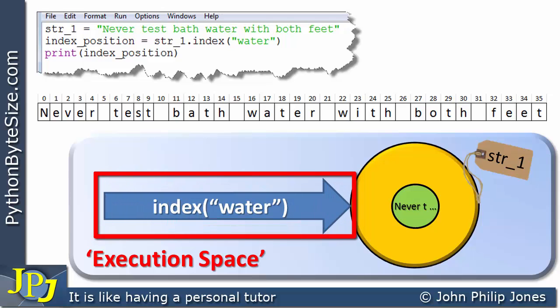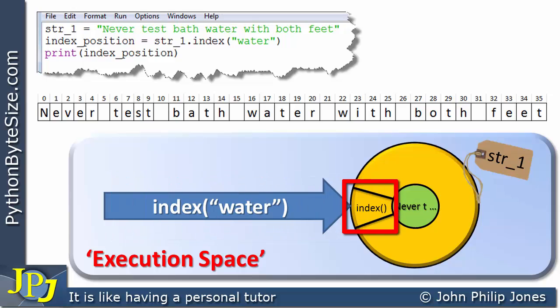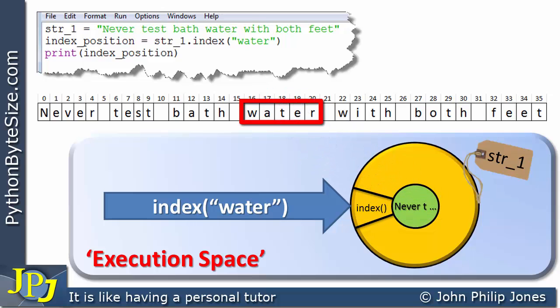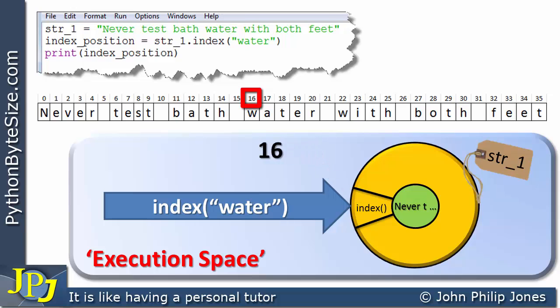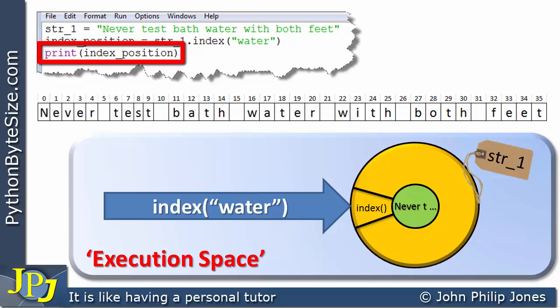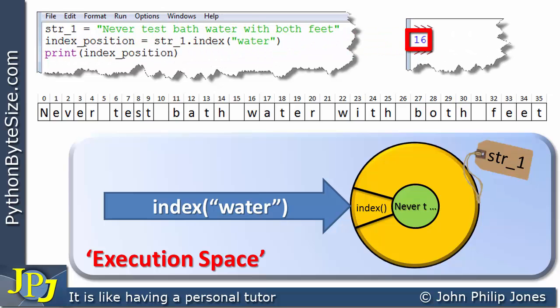The index method is invoked and looks at the string to see where 'water' is — and in fact it is there. It then determines where in the overall string it is: at index position 16. So the function returns 16, and this value is returned to the variable 'index_position'. When we then print the index position, we get 16 as the output.